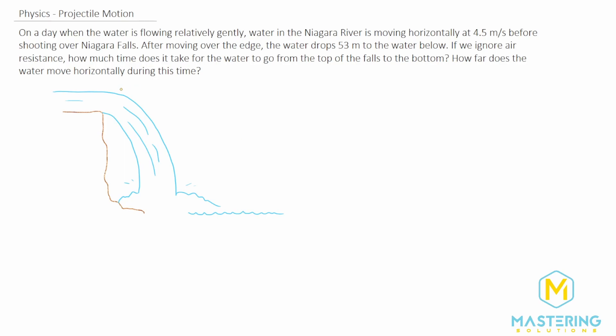They tell us that the water before it goes over the cliff is moving horizontally at a speed of 4.5 meters per second. So this is the initial x velocity, and they ask us after moving over the edge and dropping down below, how long will the water be in the air before it hits the bottom down here. And this height is 53 meters.